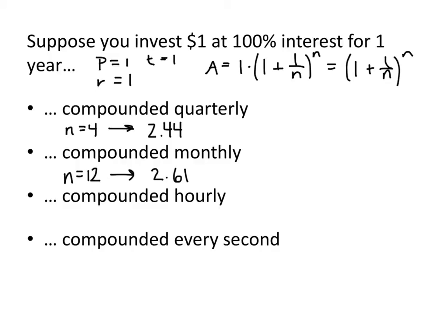But now let's kick it up a notch. Now let's compound hourly. How many hours are in a year? Well, there's 365 days in a year, and 24 hours in a day, which works out to be 8,760 hours.